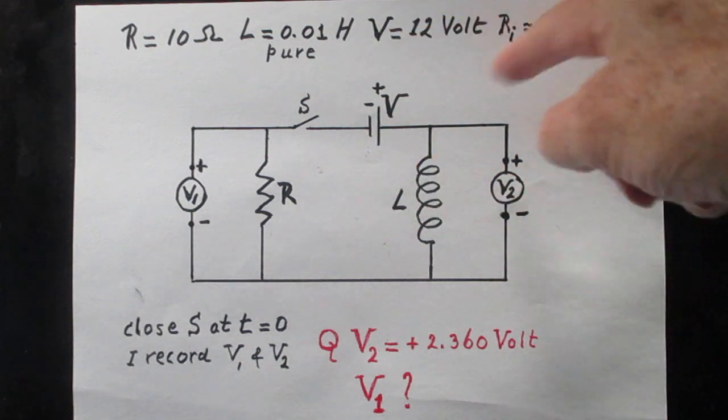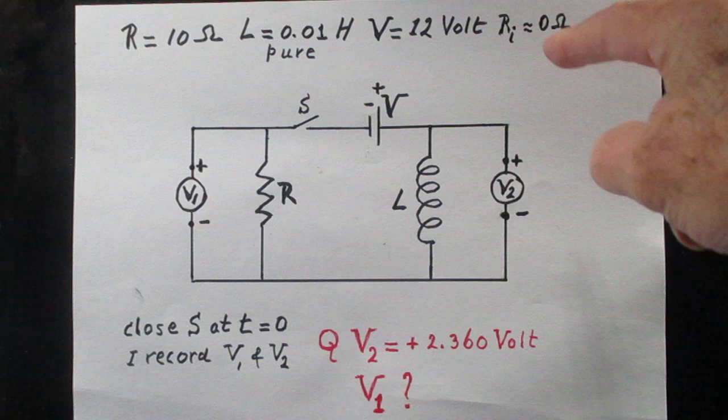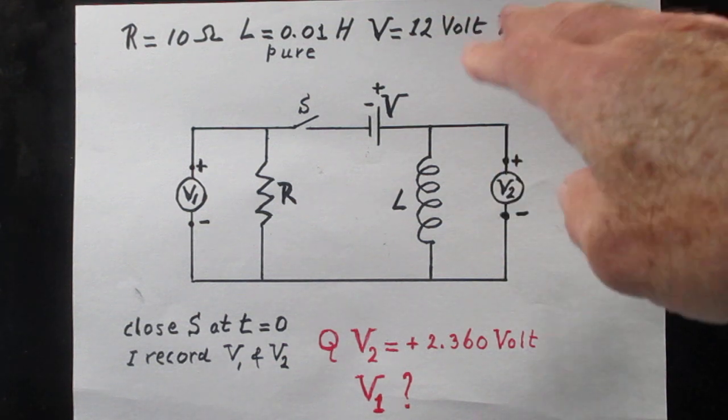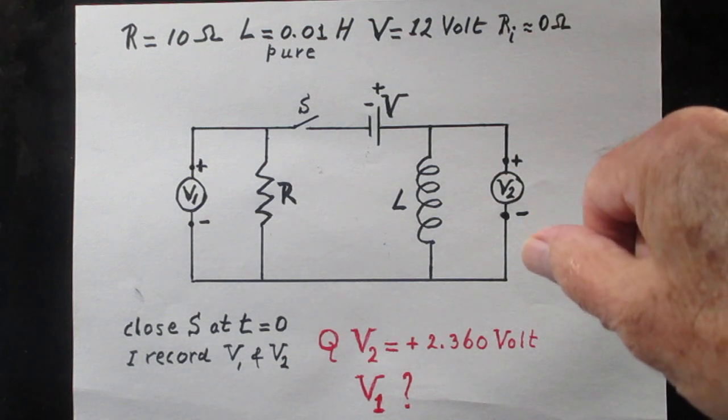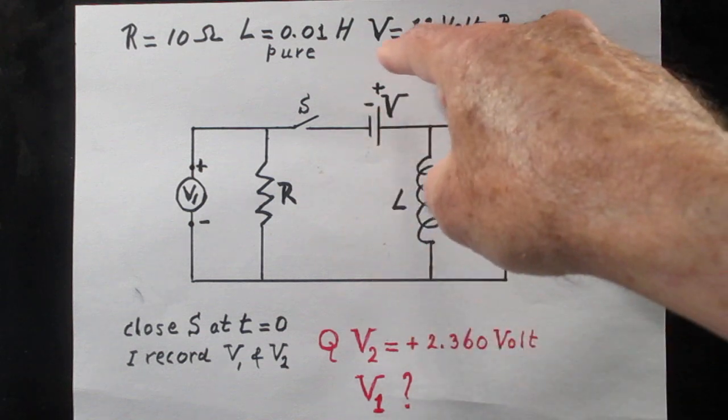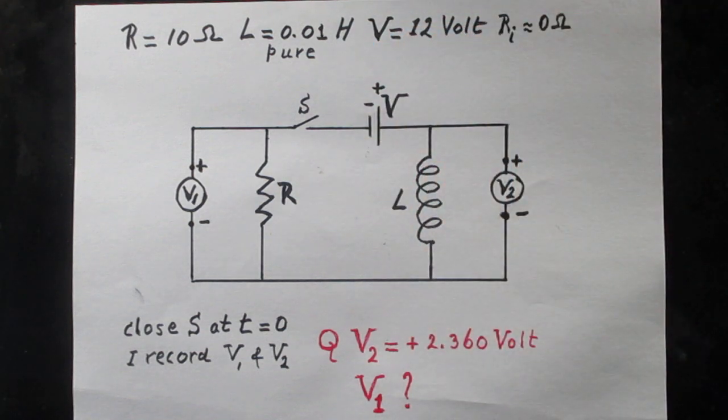The internal resistance of the battery is so low that you can ignore it. This is the plus side of the battery, this is the minus side, and it is a 12-volt battery.